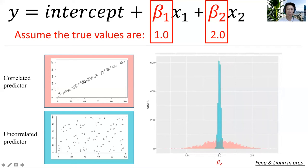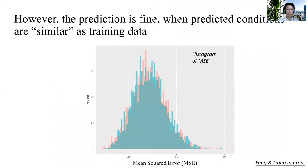It's actually the same for beta 2. You can see that both histograms are centered on 2, which is the true value. But the estimation from the uncorrelated predictors is more concentrated around the true value, whereas the ones based on correlated predictors have more uncertainty. So collinearity in the variables can affect the estimation of coefficients. However, the prediction is fine when the predicted conditions are similar to the training data — the mean histograms from either uncorrelated or correlated predictors are almost the same. Remember that there's a big 'if' here: the condition is that the predicted conditions are similar to the training data.